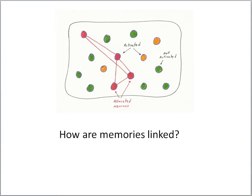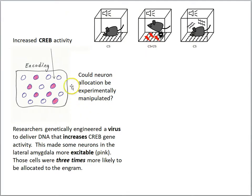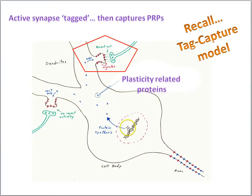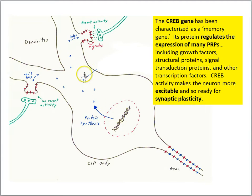In this lesson, we're going to focus on how we might understand the mechanism for linking memories together. In previous lessons, we looked at experiments that involved increasing the activity levels of the CREB gene in certain cells within a certain brain area. Cells that had elevated CREB activity were three times more likely to be allocated to the engram in a fear conditioning task. The CREB gene is just one of many genes involved in synaptic plasticity. Recall the tag and capture model where recently active synapses are tagged and can capture plasticity-related products to make lasting changes at the synapse.